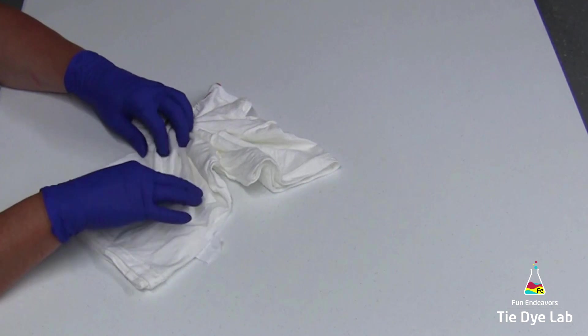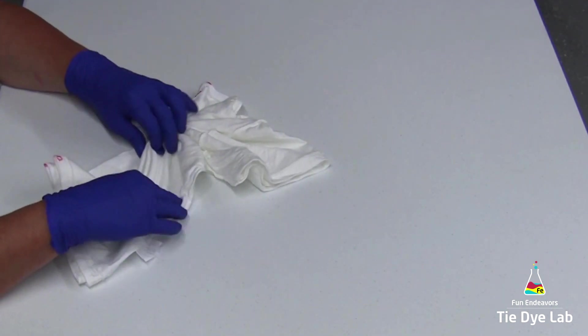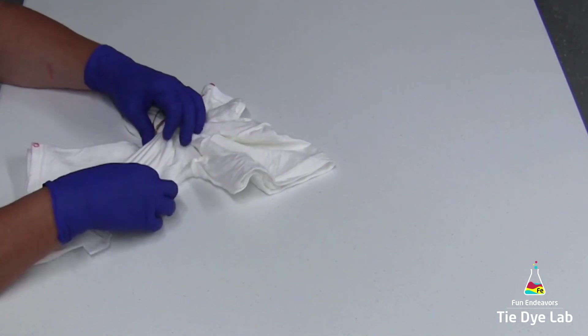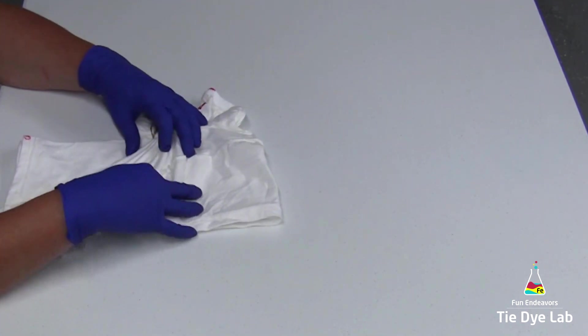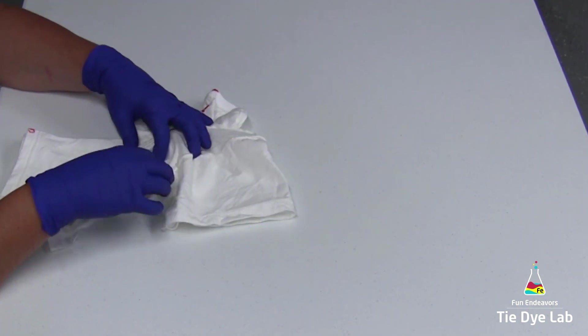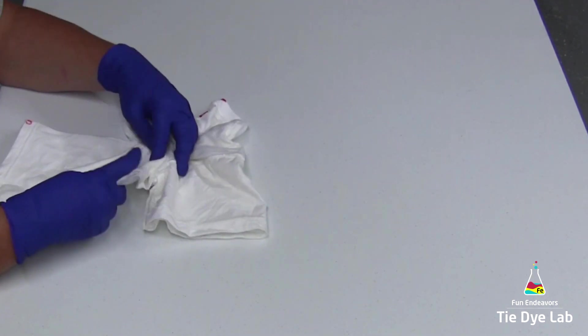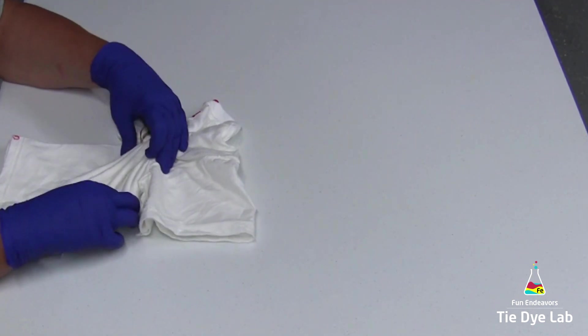I'm fan folding the rest of my shirt, and I'm going to tie it up with some kite string. I'm using kite string for this area because I don't want white lines in it. I want the dye to be able to go all the way throughout the shirt, but the kite string will help to hold all of my fan folds in place nice and tightly.